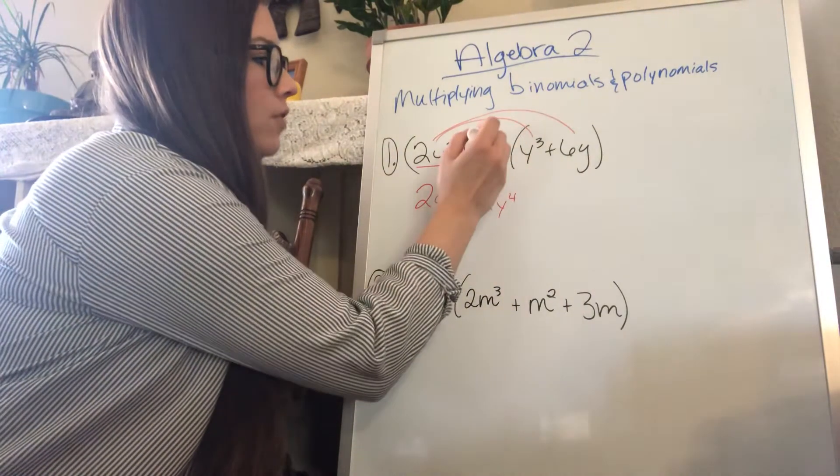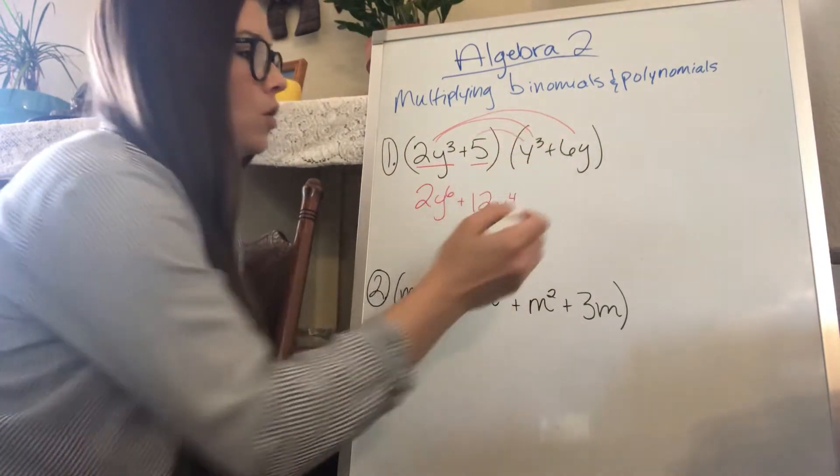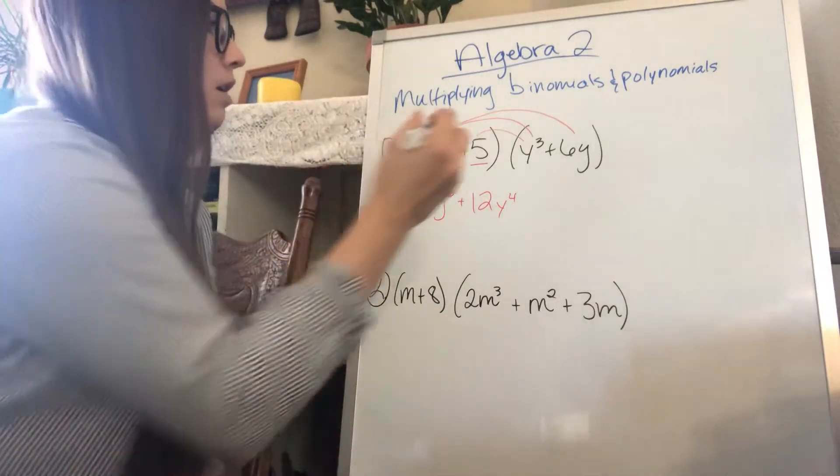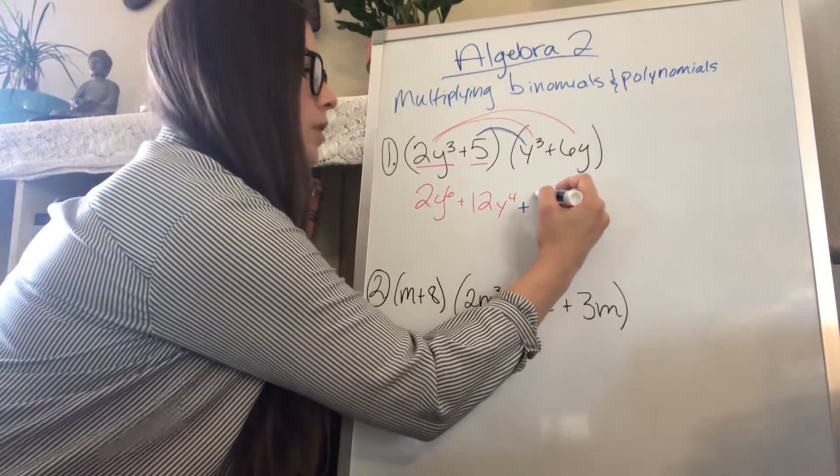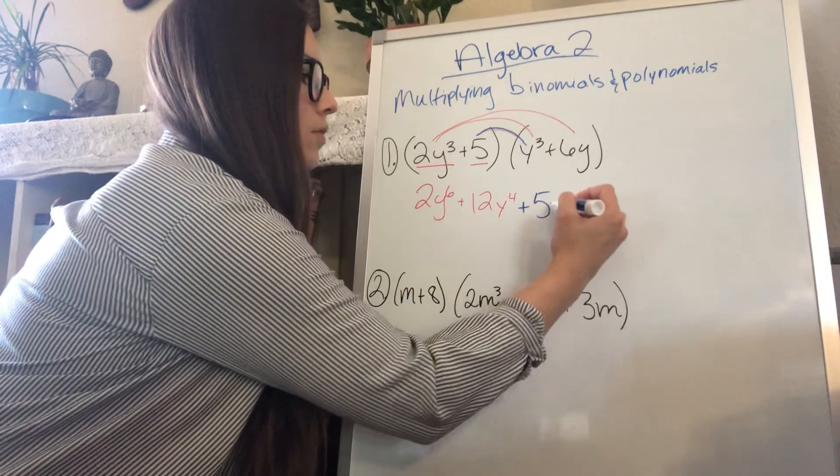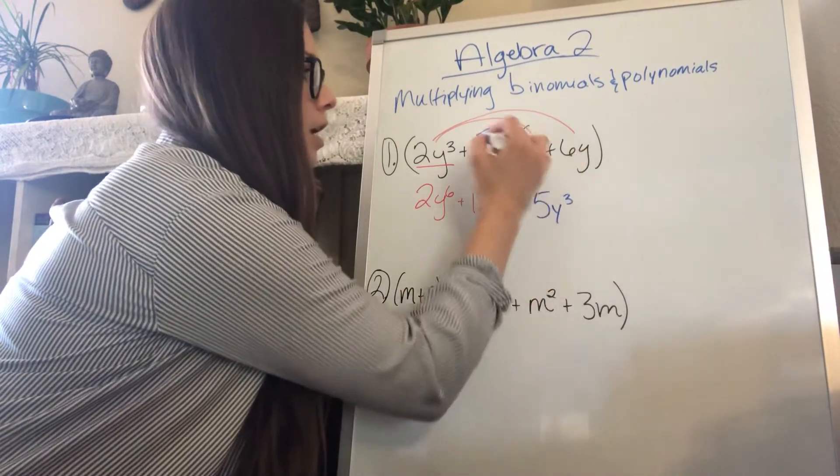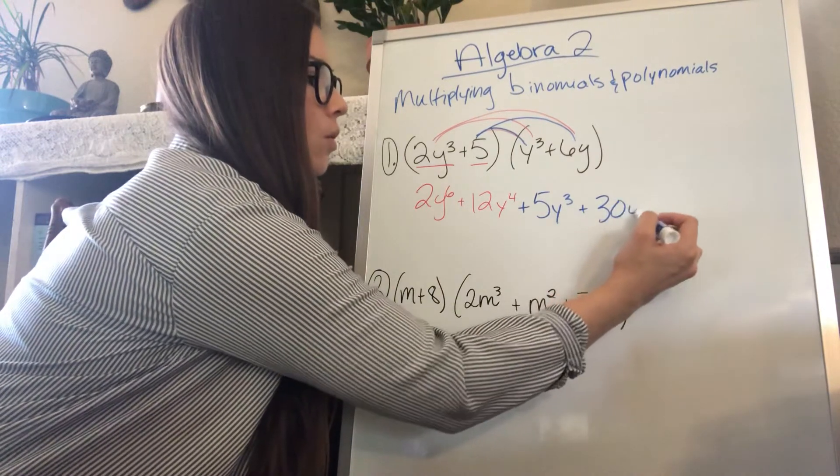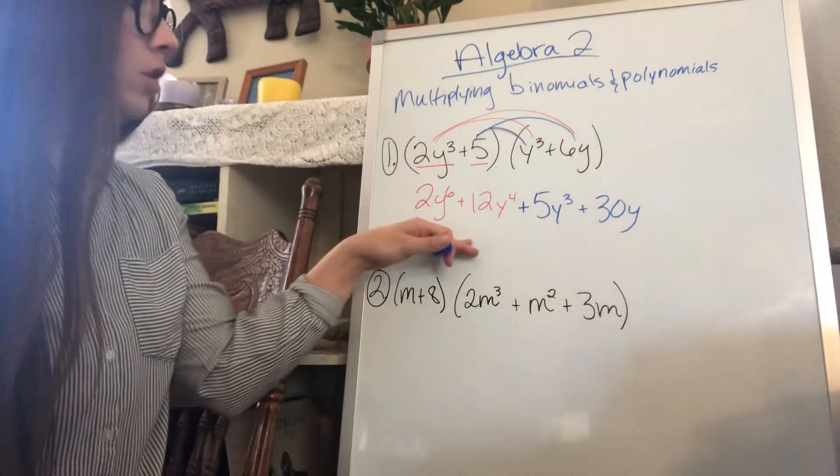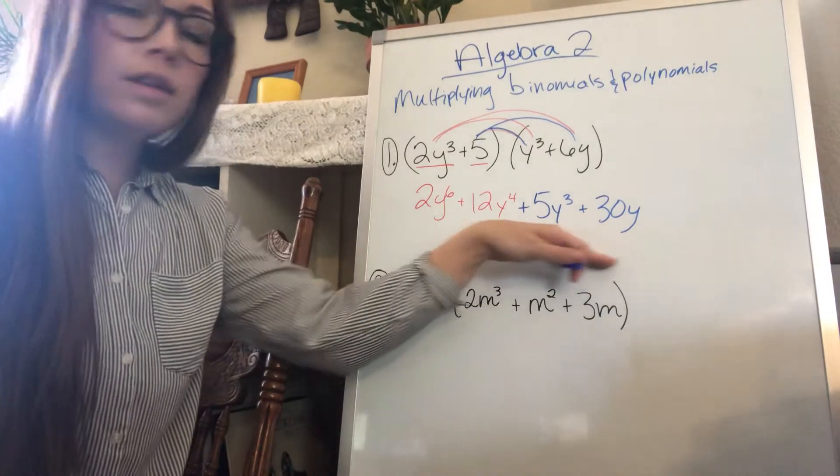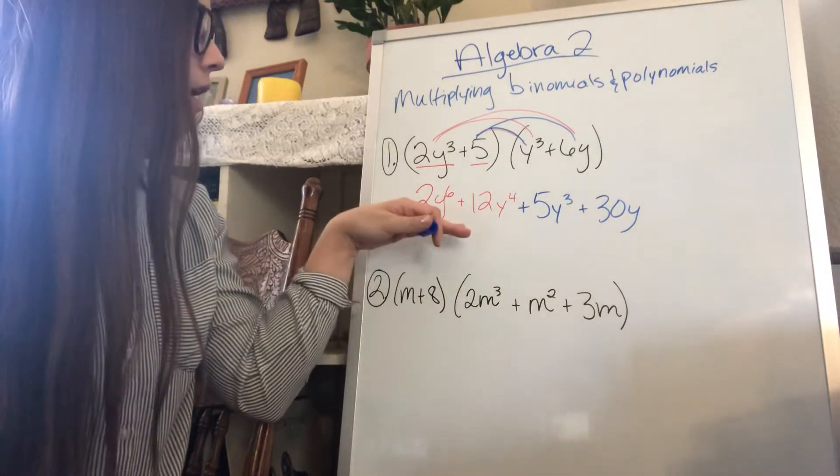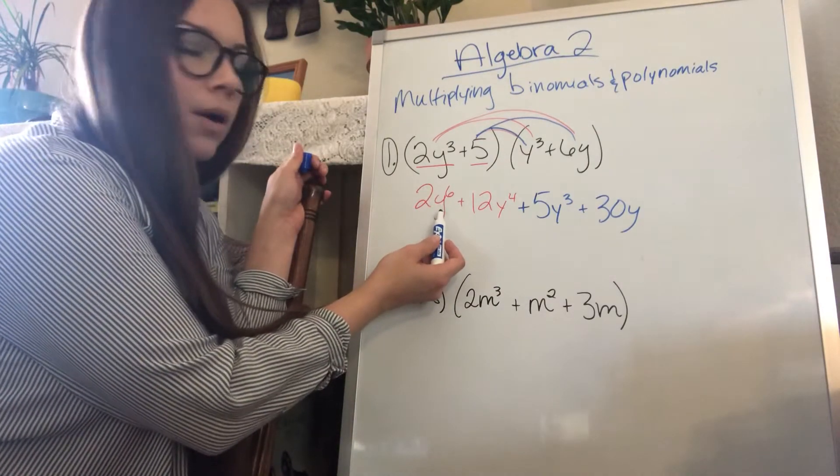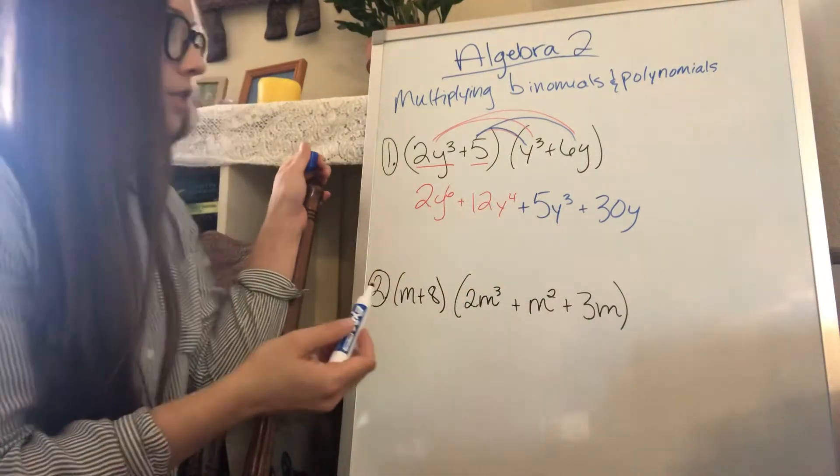Now we're going to distribute the 5. 5 times y cubed is going to be plus positive 5y cubed and 5 times 6y will be 30y. And then you combine any like terms that you can. Here we can't. And then you make sure that it's written in standard form, which it already is because it has 2y to the 6th, the highest power first, and then gradually goes down.